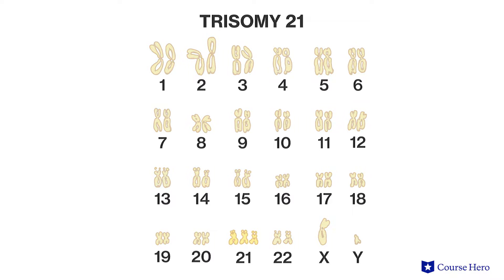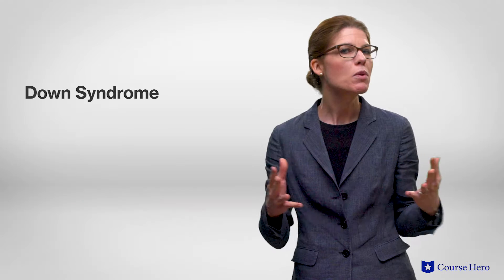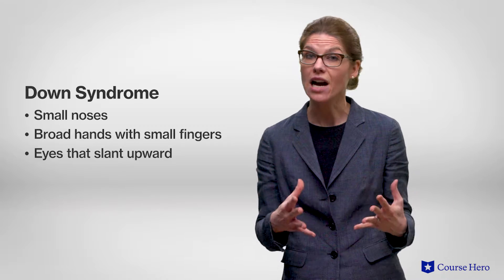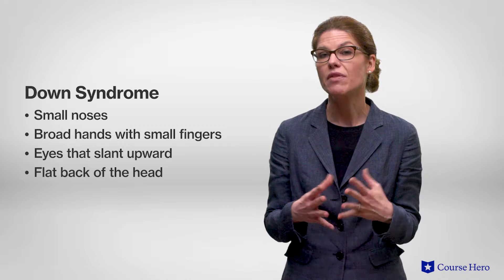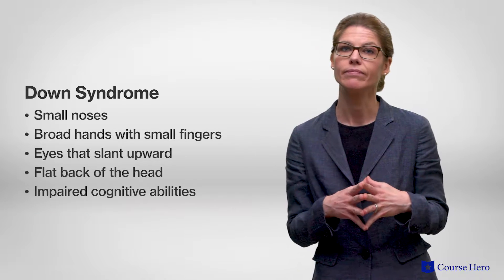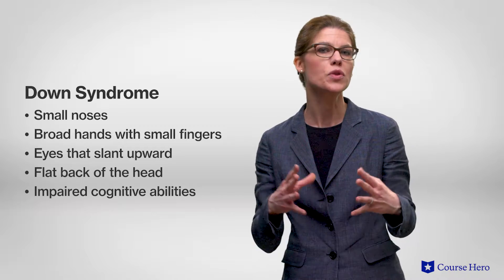Down syndrome is an example of a disorder that arises from having an abnormal number of chromosomes. It is an example of trisomy 21, caused by the presence of all or part of a third copy of chromosome 21. People with this genetic disorder tend to have small noses, broad hands with small fingers, eyes that slant upward and outward, and a flat back of the head. They also tend to have impaired cognitive abilities, which causes delayed development, but the severity of these symptoms varies greatly in affected individuals. About 1 in 800 babies born have Down syndrome, but the incidence increases as the age of the mother increases. Human females over the age of 35 are 500 times more likely to have a child with Down syndrome than those who are younger.